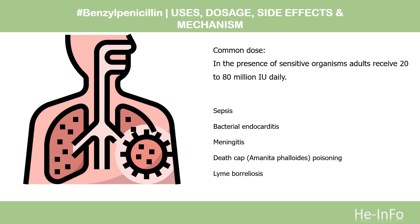Meningitis: To prevent convulsions and Jarisch-Herxheimer reactions, daily doses should not exceed 20 to 30 million IU in adults and 12 million IU in children. In extremely severe cases, the first dose should be protracted, starting with one quarter of the individual single-dose level, and administered slowly under careful observation of the patient.